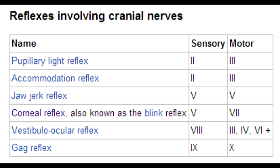What is the afferent nerve that helps cause the gag reflex? The afferent nerve is cranial nerve 9, the glossopharyngeal nerve. The efferent nerve that helps cause the gag reflex is cranial nerve 10, the vagus nerve.